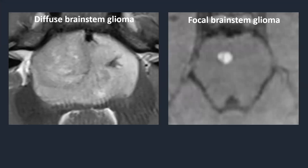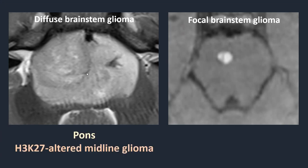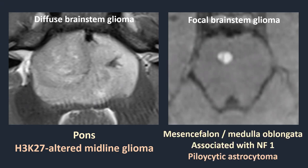To summarize brainstem gliomas: we can distinguish two types. Diffuse brainstem gliomas — the majority located in the pons, high grade, H3K27-altered diffuse midline gliomas. Or focal, sharply demarcated gliomas — completely enhancing, a cyst with an enhancing nodule, or solid with some areas of enhancement — these are mostly pilocytic astrocytomas, tend to be in the mesencephalon or medulla oblongata, with an association with neurofibromatosis type 1.